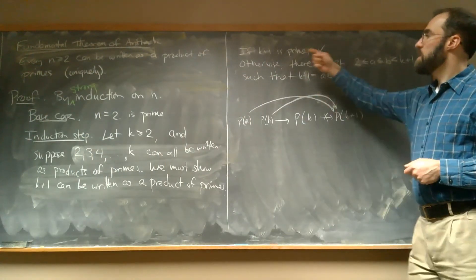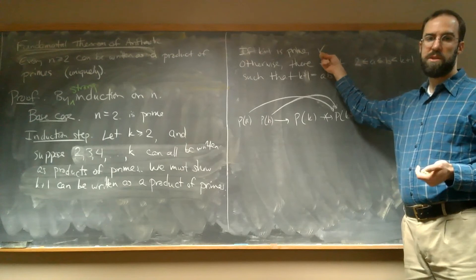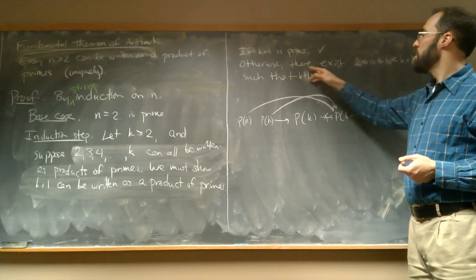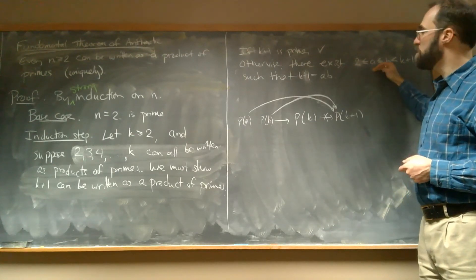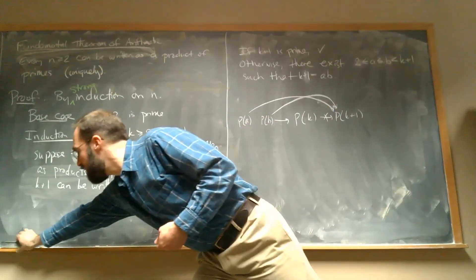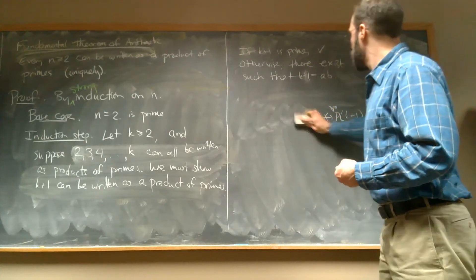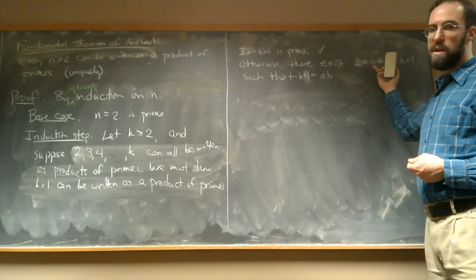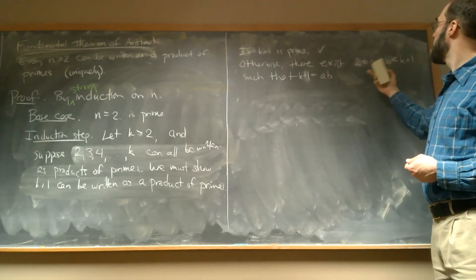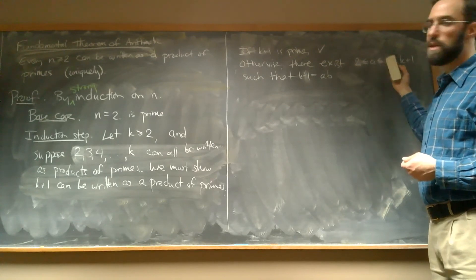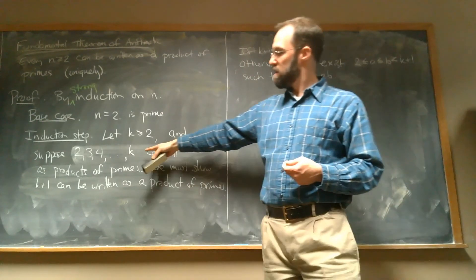And over here, if K plus 1 is prime, this part is still the same. That's fine. Otherwise, there exist. This is all still true, but now we can make some progress, because A and B, these two numbers, they're somewhere in between 2 and K. So they're in this list.